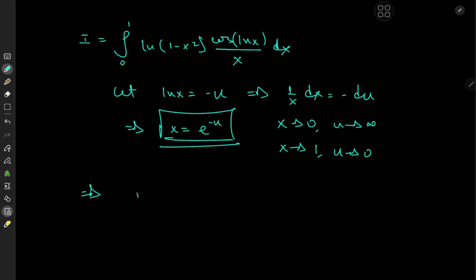So this implies that I equals the integral from infinity to 0 of log(1-e^(-2u)) times cosine(-u) du. And we could get rid of the negative sign because of the differential element by switching up the limits of integration. So we now have the integral from 0 to infinity.